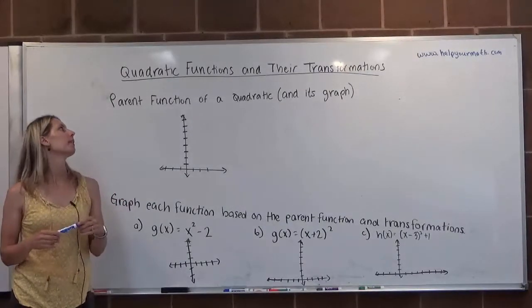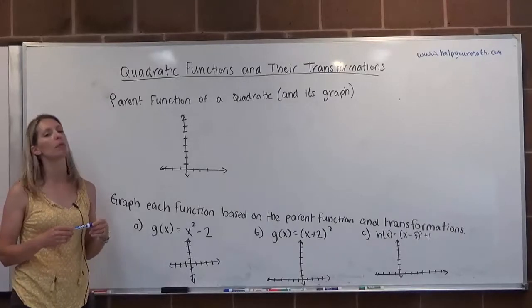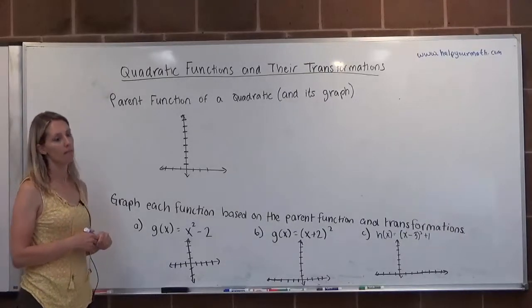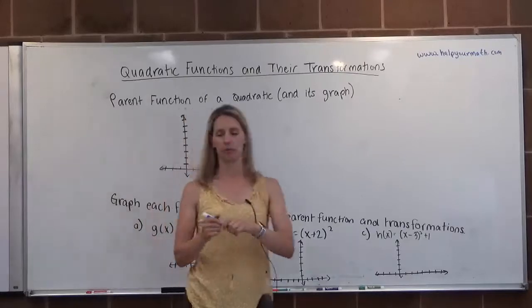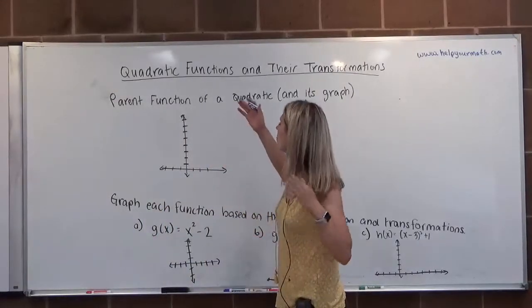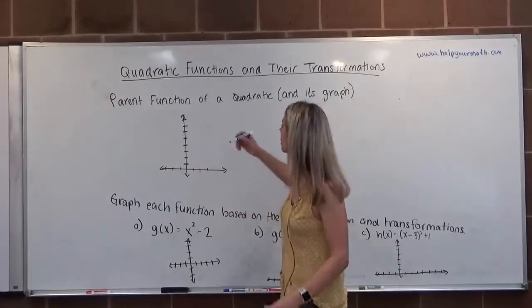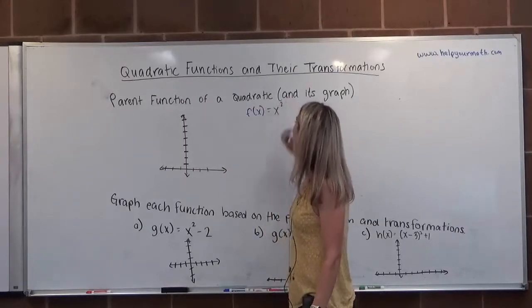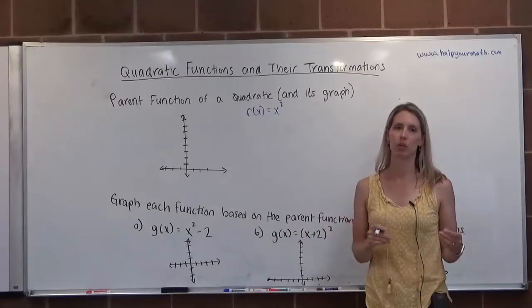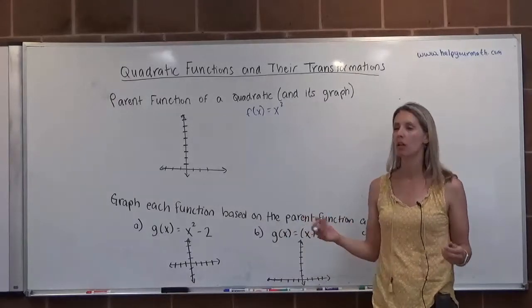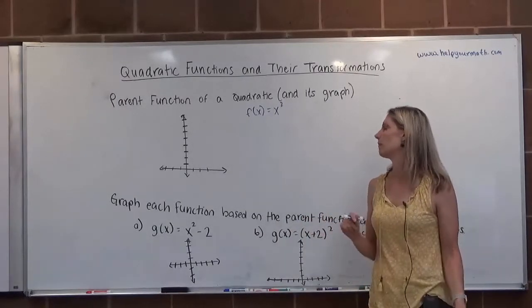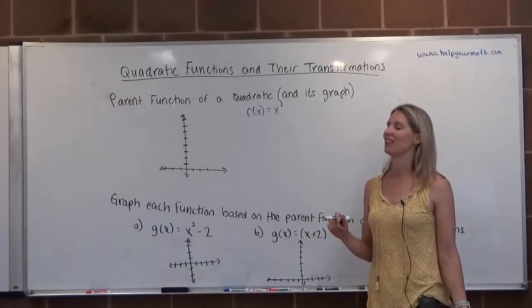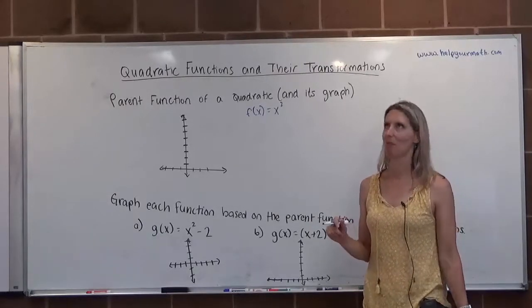Okay, so we're going to talk about the parent function of a quadratic function and then we're going to also look at its graph. The parent function, that's when we just have the basic beginning function, and for a quadratic that would be f(x) equals x squared. So x squared, anytime the largest exponent is 2, that is a quadratic function and this would be the parent function of that type of function.